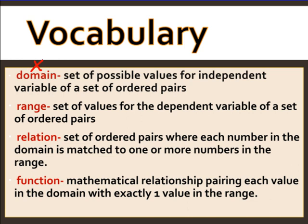The x-coordinate is what domain refers to. A range is a set of values for the dependent variable of a set of ordered pairs — this is working with your y-coordinate. A relation is just a set of ordered pairs where each number in the domain is matched to one or more numbers in the range.